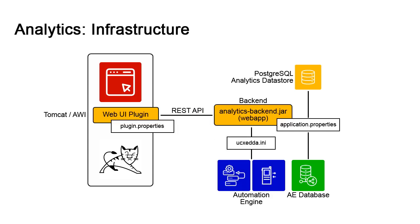Finally, we have the web UI plugin, which we install with the AWI web application. It serves the interface elements and has one configuration file, plugin.properties, which contains the REST API encryption key for security and connection details to the analytics database.